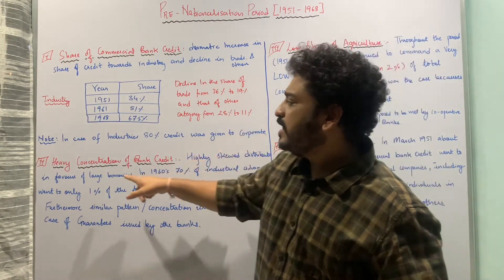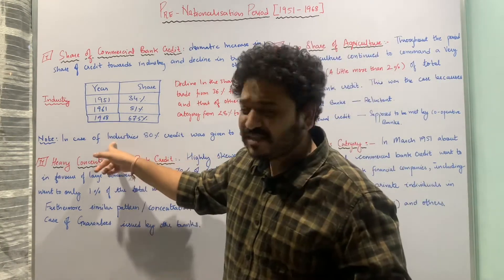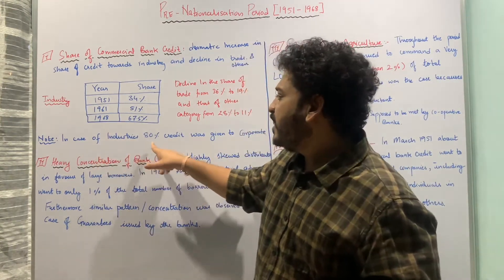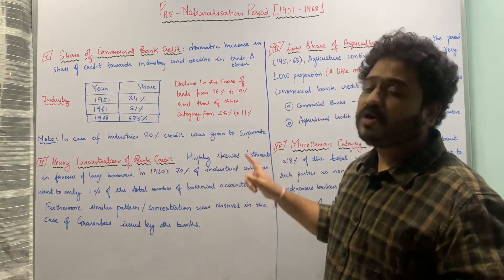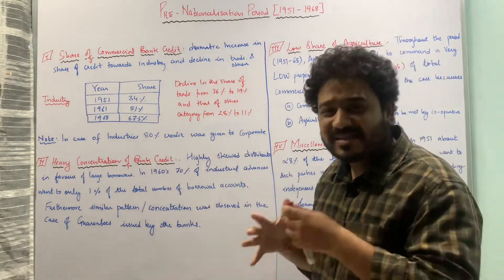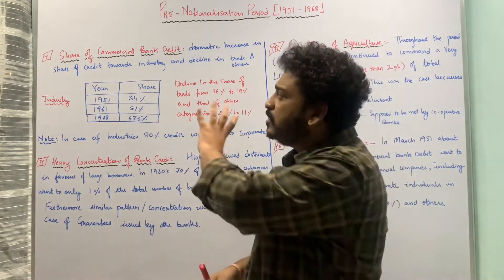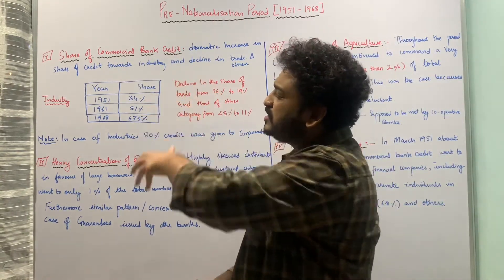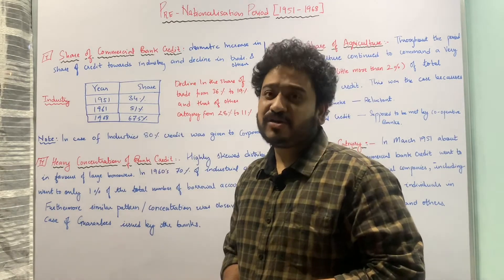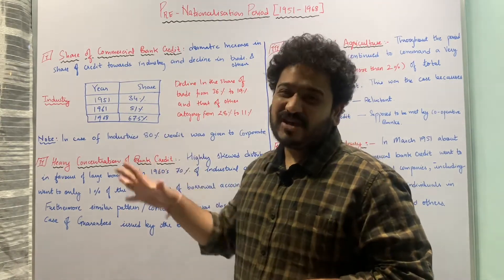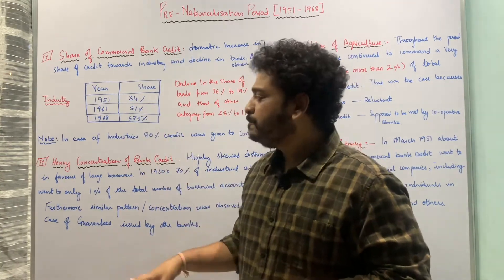Furthermore, within industry, 80% of the credit was given to corporates. So you can see the changing pattern of credit dissemination during the pre-nationalization period.